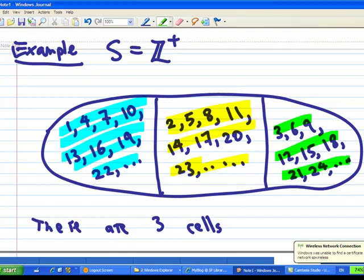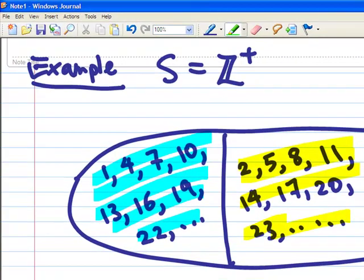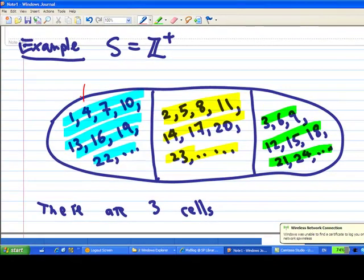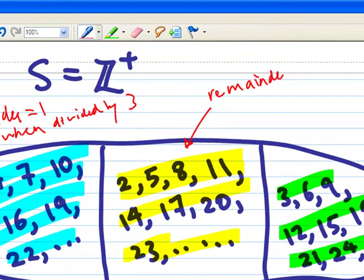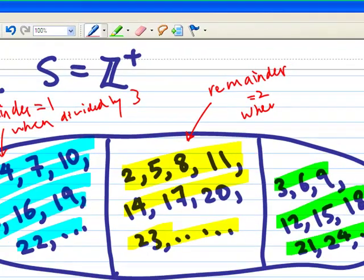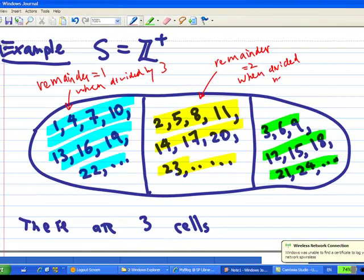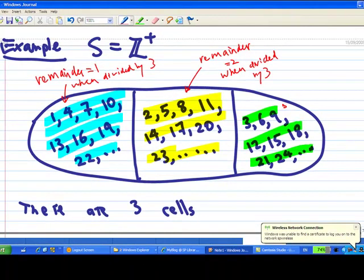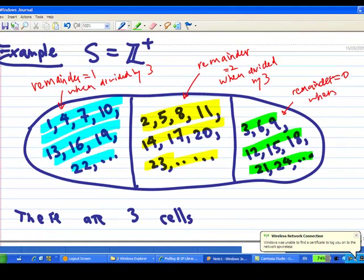So what do these cells actually consist of? The first one is actually all the numbers where you divide the number by 3, the remainder is 1. Whereas in the yellow cell, all the numbers inside there have remainder 2 when divided by 3. Then all those numbers in the green cell have remainder 0 when divided by 3.